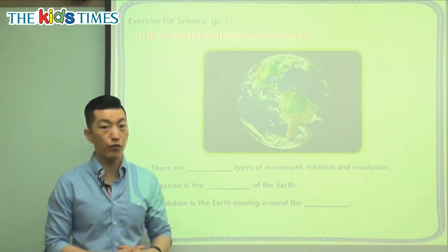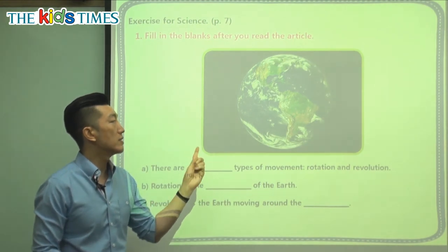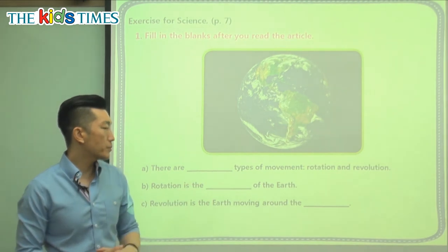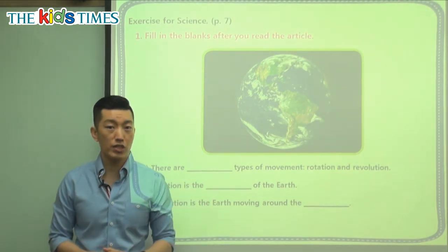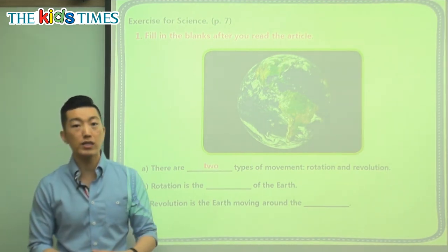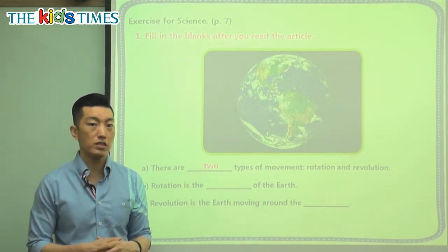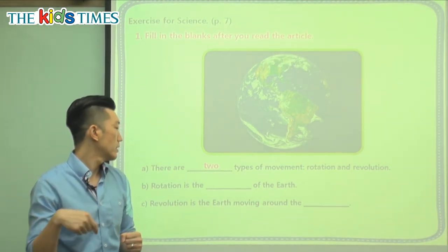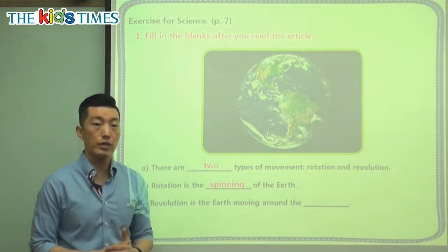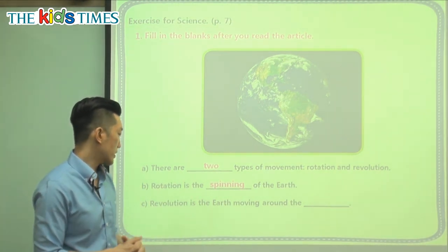Let's take a look at our questions. Let's fill in the blank. Here's another picture of our planet Earth as it is rotating and revolving. There are blank types of movements — rotation and revolution. How many is that? There are two types of movements. Rotation is the blank of the Earth — it causes day and night. Rotation is the spinning of Earth. Imagine a basketball spinning on a person's finger — that's the rotation.